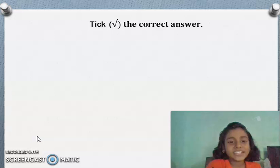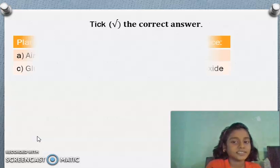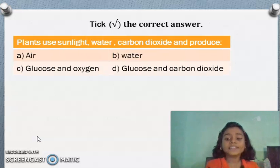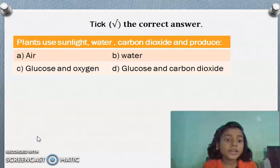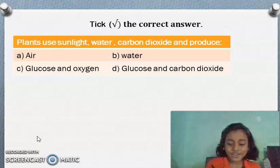First one is tick the correct answer. Plants use sunlight, water, carbon dioxide and produce air, water, glucose and oxygen, glucose and carbon dioxide. What is your answer? Yes, glucose and oxygen. We will put here tick mark.